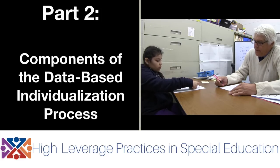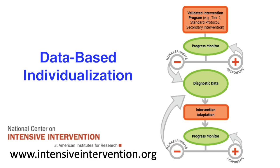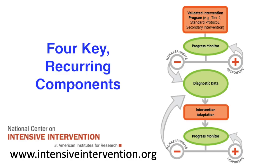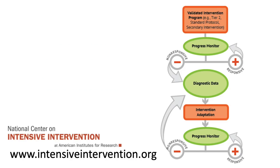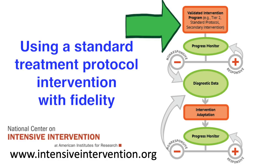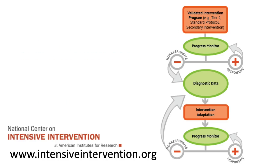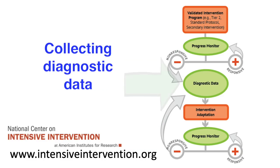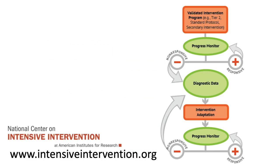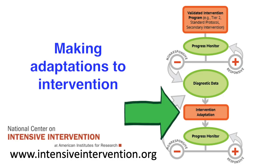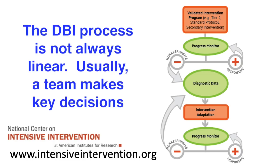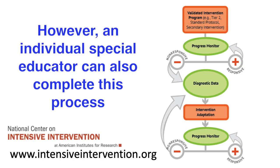Part 2: Components of the Data-Based Individualization Process. Data-based individualization, as described by the NCII, has four key components which recur as needed based on available student performance data. The components are: 1) Using a standard protocol intervention program with fidelity; 2) Regularly monitoring student progress; 3) Collecting diagnostic data in areas of concern; 4) Making data-driven adaptations to intervention offerings. These steps often occur concurrently and are usually implemented by a team of professionals, but can also be implemented by individual special educators.